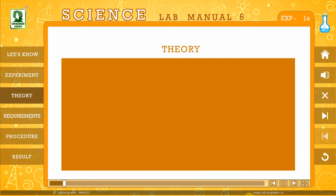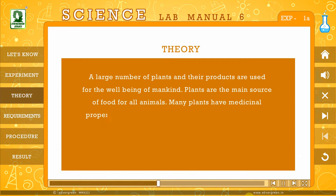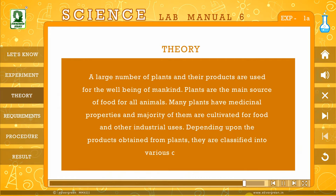Theory: A large number of plants and their products are used for the well-being of mankind. Plants are the main source of food for all animals. Many plants have medicinal properties, and a majority of them are cultivated for food and other industrial uses. Depending upon the products obtained from plants, they are classified into various categories.